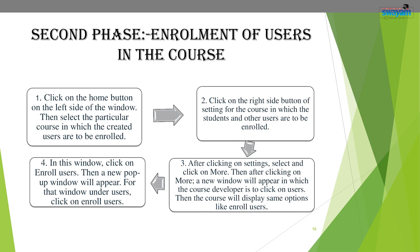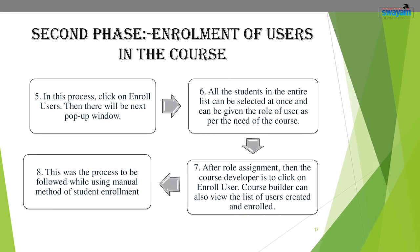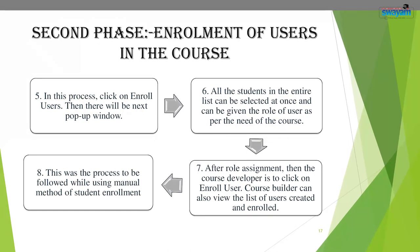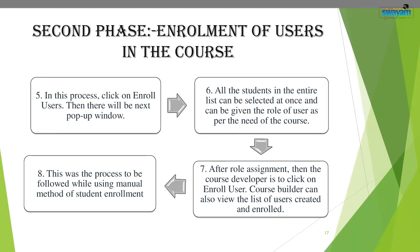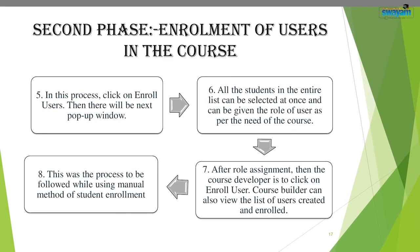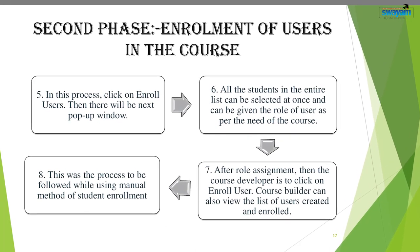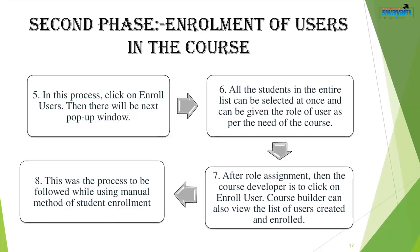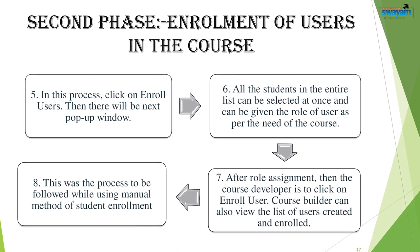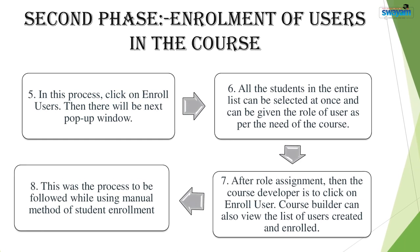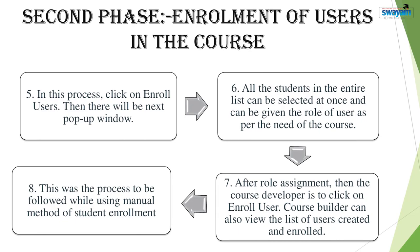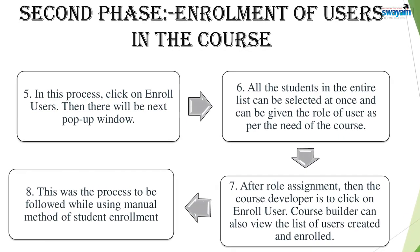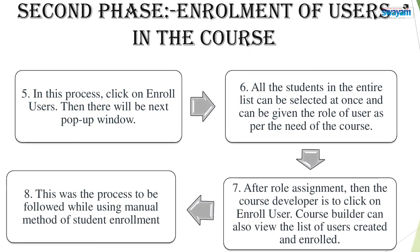A new pop-up window will appear. Under Users, click on 'Enroll Users'. Moodle will prompt you to search for users in the search bar. After role assignment, click on 'Enroll User'. The course builder can also view the list of users created and enrolled. This was the process for manual student enrollment.